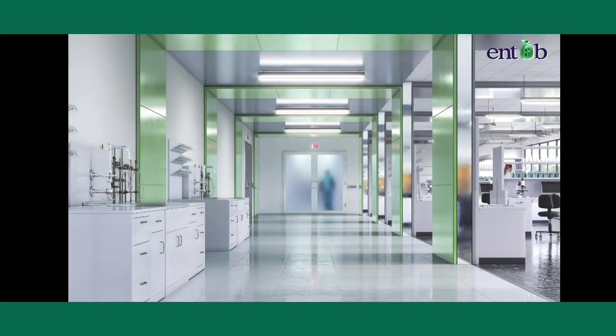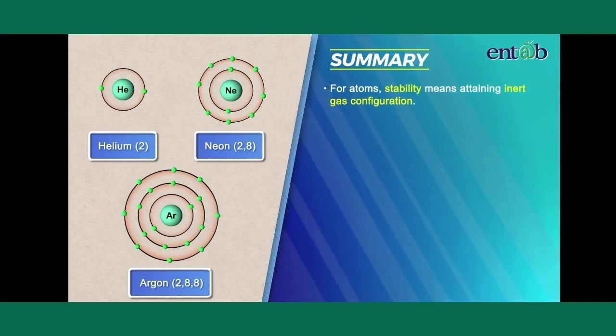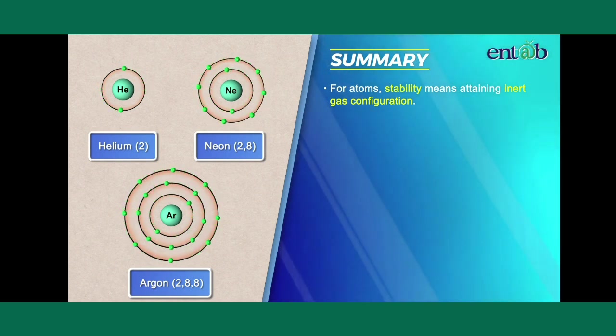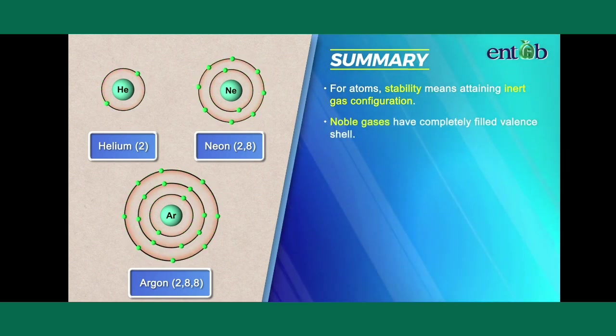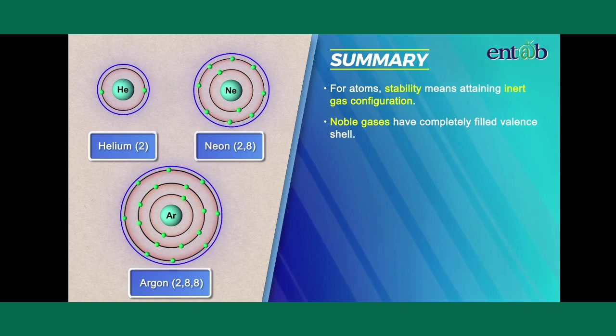Let us now quickly recapitulate what we have learned in this module. For atoms, stability means attaining inert gas configuration. Noble gases have a completely filled valence shell.